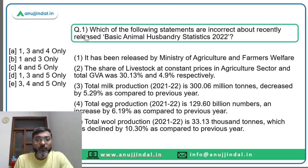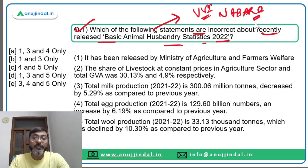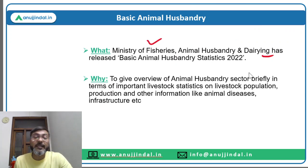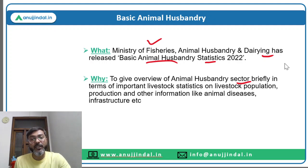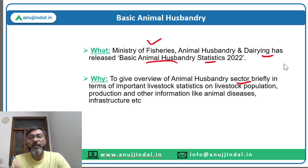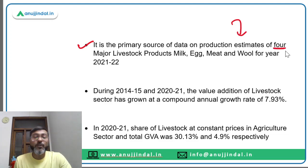The first question asks which of the following statements are incorrect about the recently released Basic Animal Husbandry Statistics 2022 — a very important question for the NAVAD examination. The Ministry of Fisheries, Animal Husbandry and Dairying has released these statistics for 2022, providing an overview of the animal husbandry sector in terms of livestock population, production and other relevant information like animal diseases and infrastructure. It is the primary source of data on production estimates of four major livestock products: milk, egg, meat and wool.